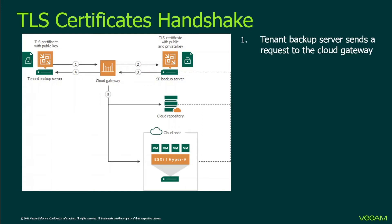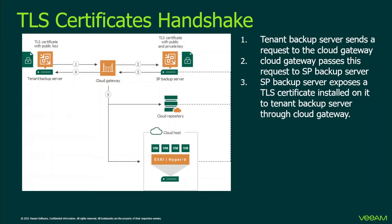In step one, the tenant backup server sends a request to the Cloud Gateway, because there is a backup or replication job and the tenant wants to create a ciphered tunneled connection. The Cloud Gateway takes that request and passes it to the service provider backup server. First, there is an authentication process where username and password are checked. Once verified, in step three, the service provider backup server exposes a TLS certificate installed in its store and passes it to the tenant backup server through the Cloud Gateway.